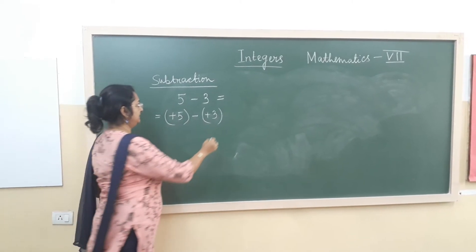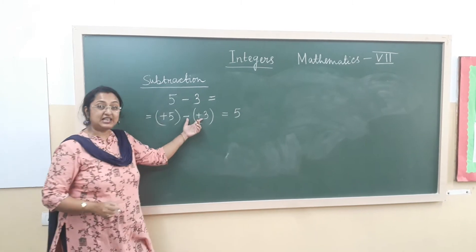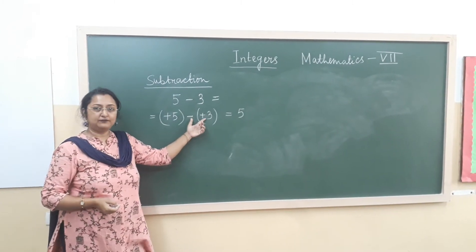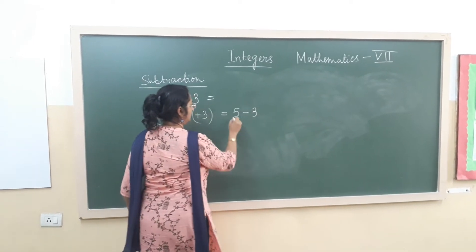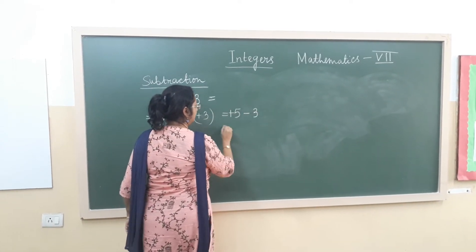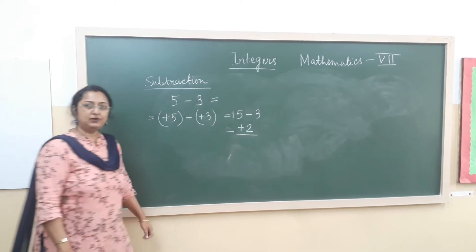So this will be 5, and we are changing the sign of the second integer. So this is plus, this will become minus. So plus 5 minus 3. The answer will be 2 and the sign will be positive.